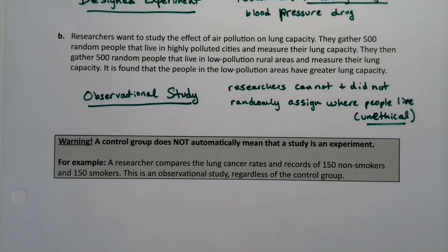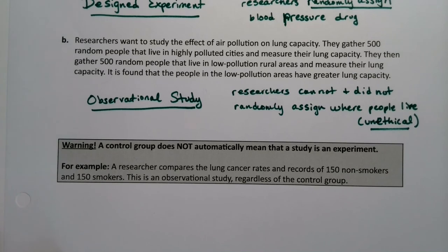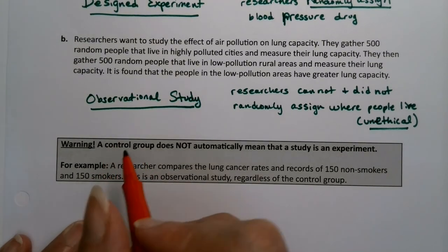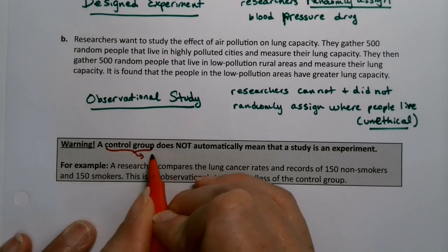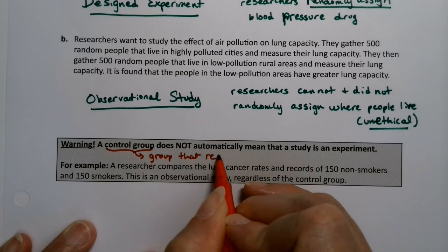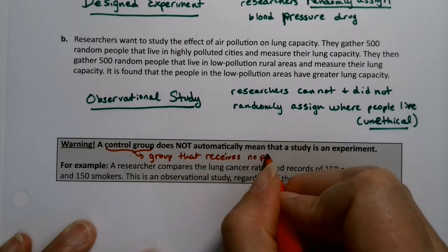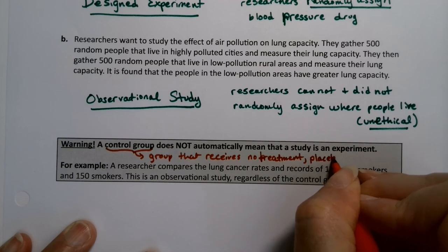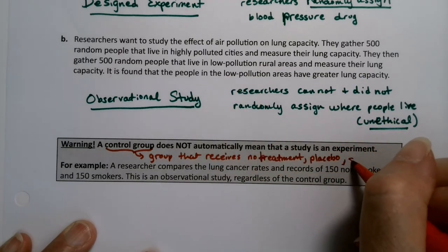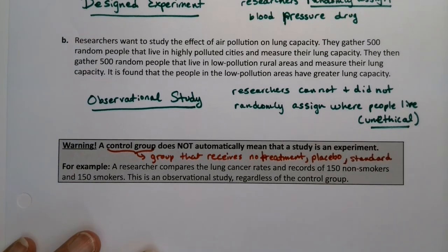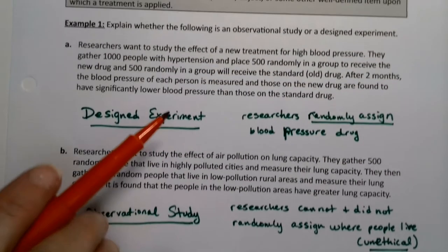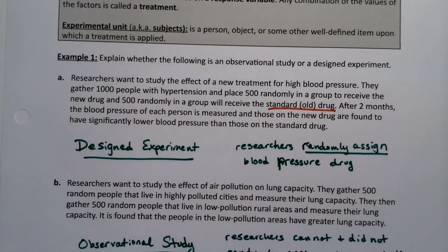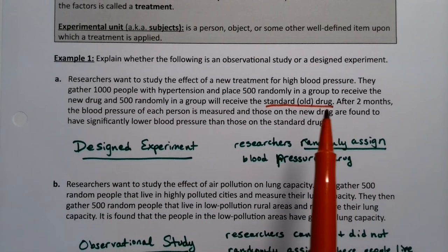A word of caution: a control group doesn't necessarily mean that it's an experiment. When science people talk about control, they're talking about the group you're controlling against — the placebo group, the group that gets nothing. This is the group that receives no treatment, a placebo treatment, or sometimes the standard treatment, which is what it was in the blood pressure case — because it would be unethical to not give people the needed medication.